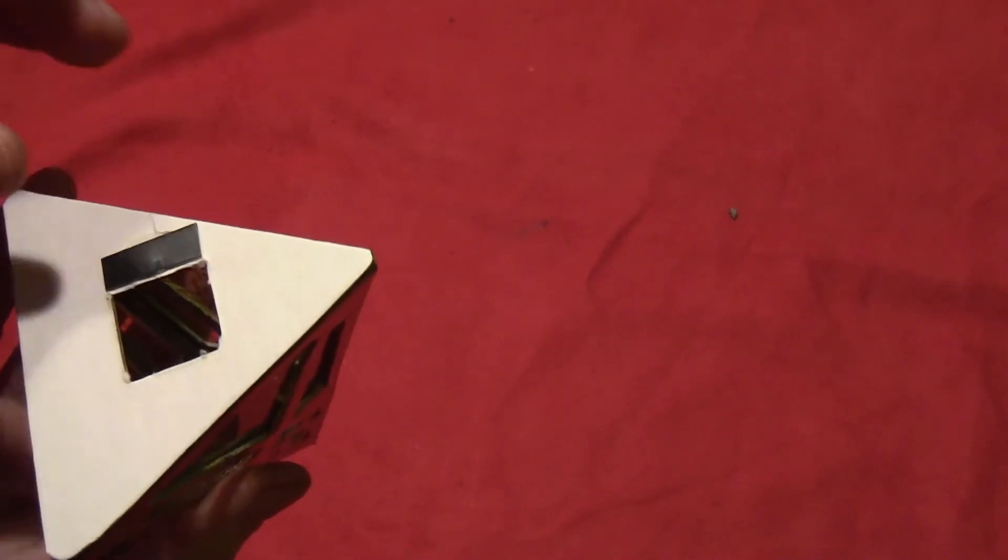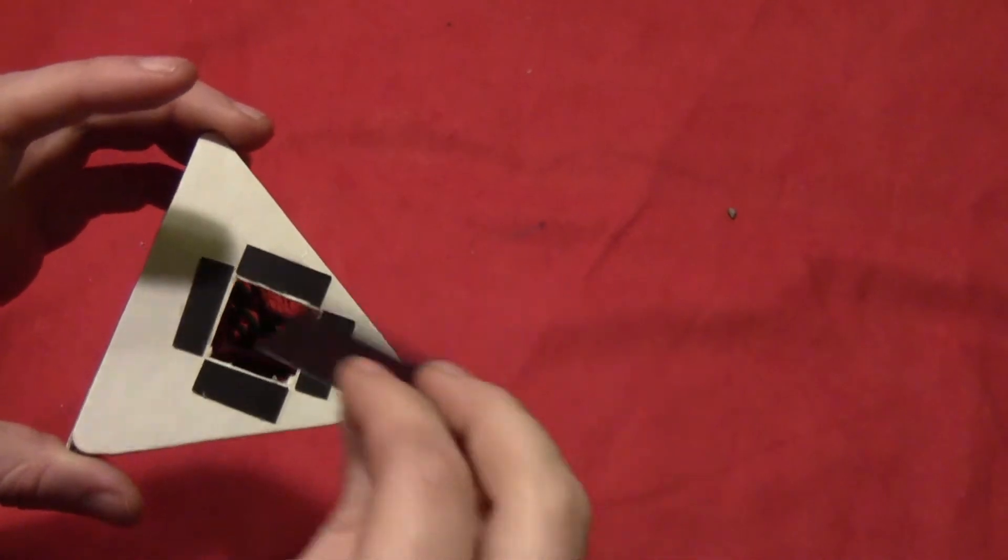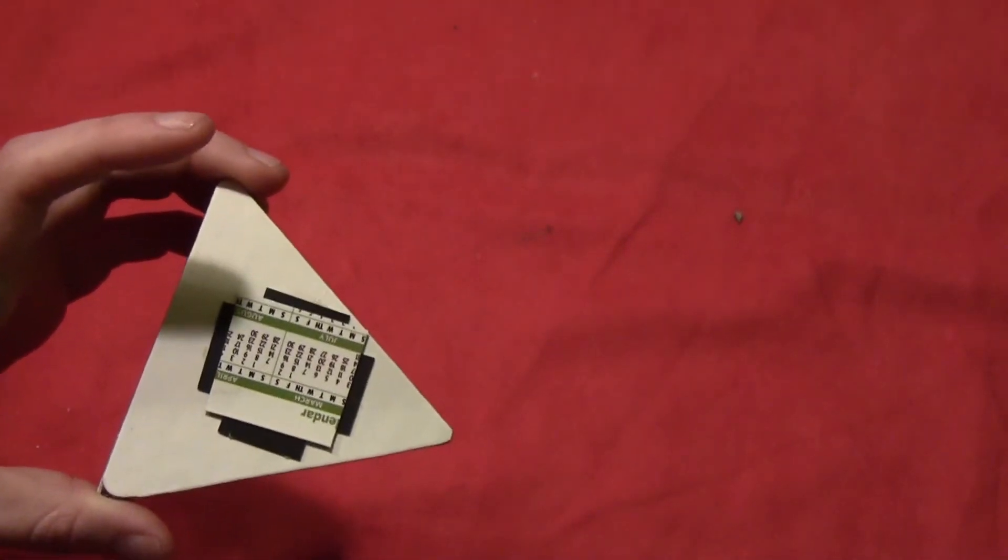Then glue little pieces of magnet around the hole. These are left over from a magnetic calendar. You'll take a fifth piece of magnet and that will close up the bottom of the hole.